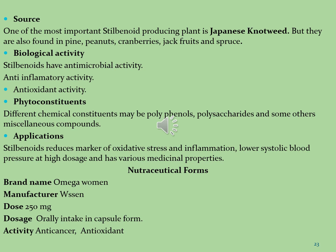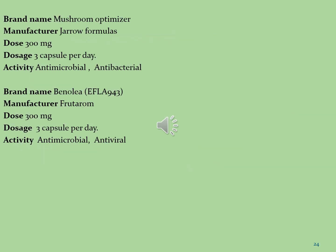Important pharmaceutical brands based on stilbenoid phytoconstituents include: Omega Women, manufactured by Vassan, dose 50 mg per day, formulated in tablet and capsule dosage forms, used as anti-cancer and antioxidant agents. Mushroom Optimizer, manufactured by Gero Formulas Nutraceuticals, dose 300 mg per day in capsule form, used as antimicrobial and antibacterial agents. Benolia Effla 943, manufactured by Frutal Nutraceuticals, dose 300 mg per day in capsule form, used as antimicrobial and antiviral agents.